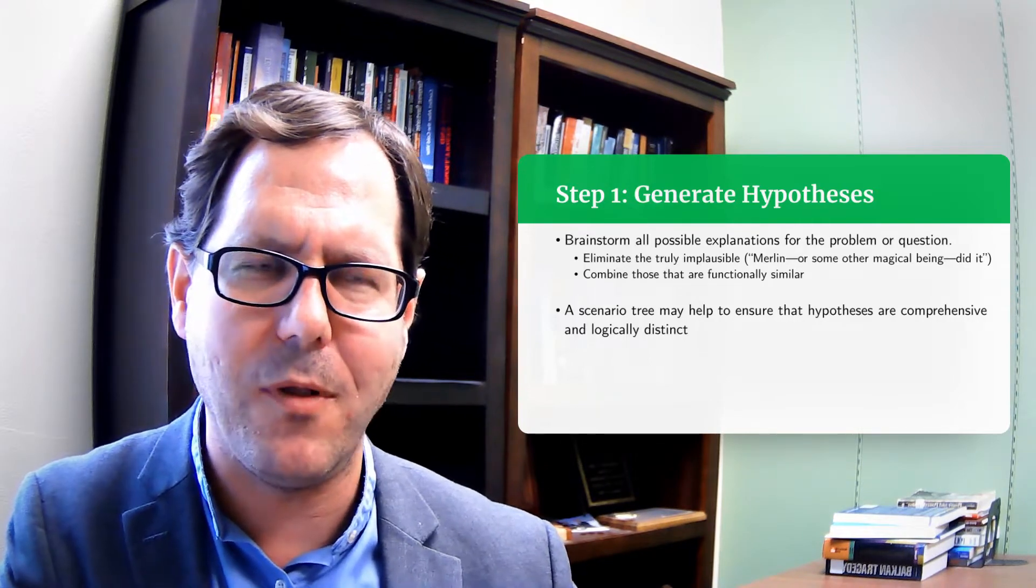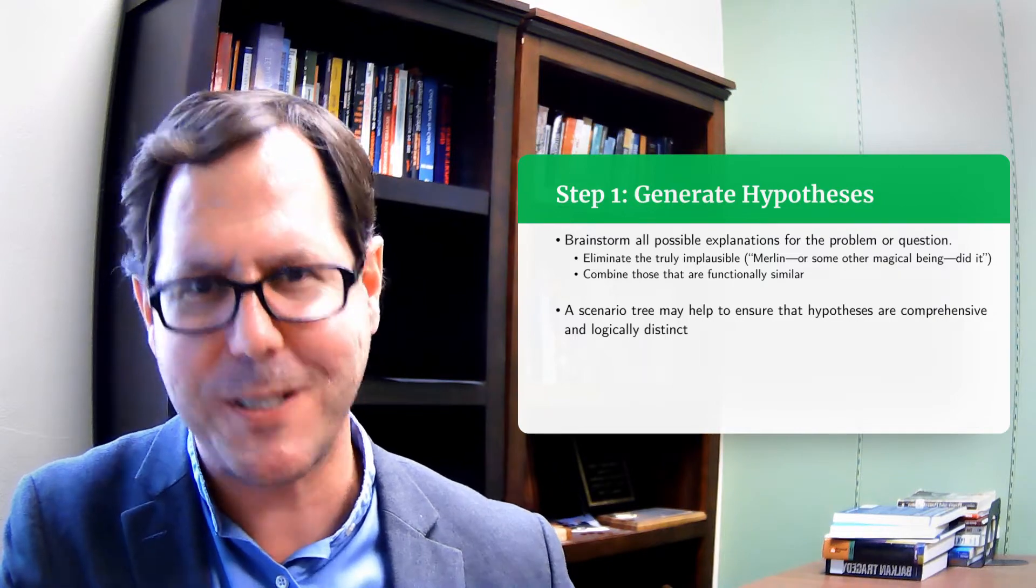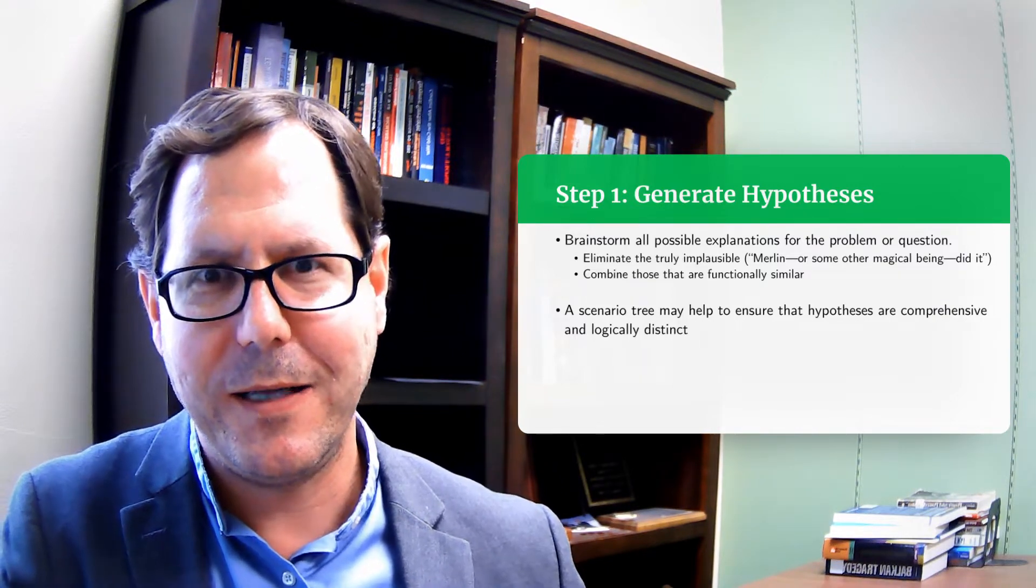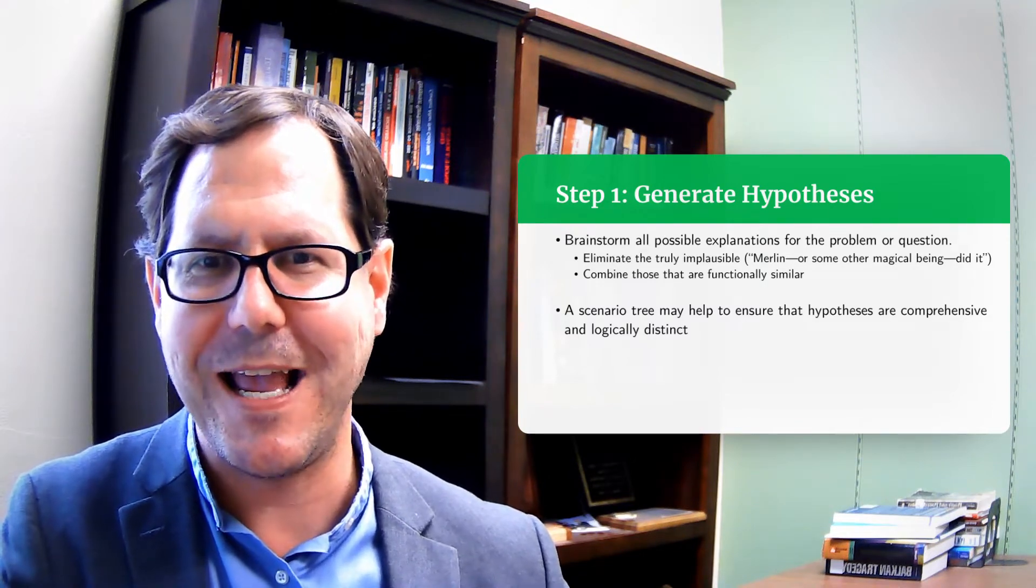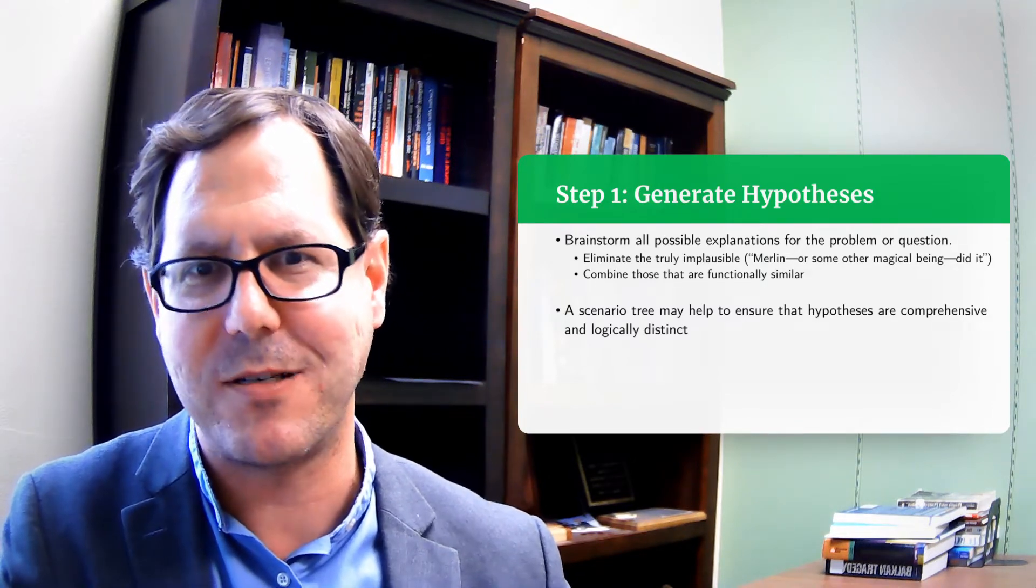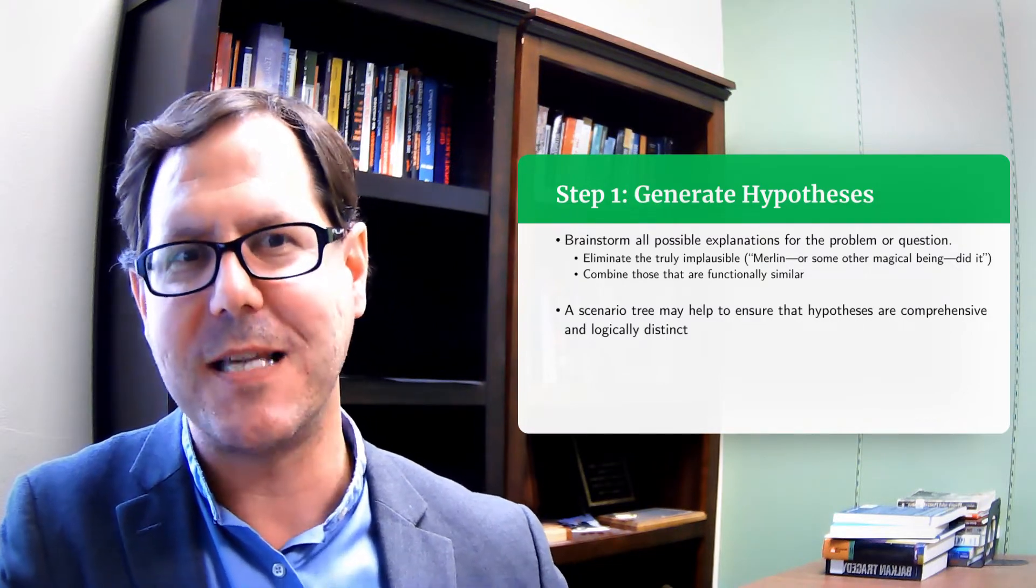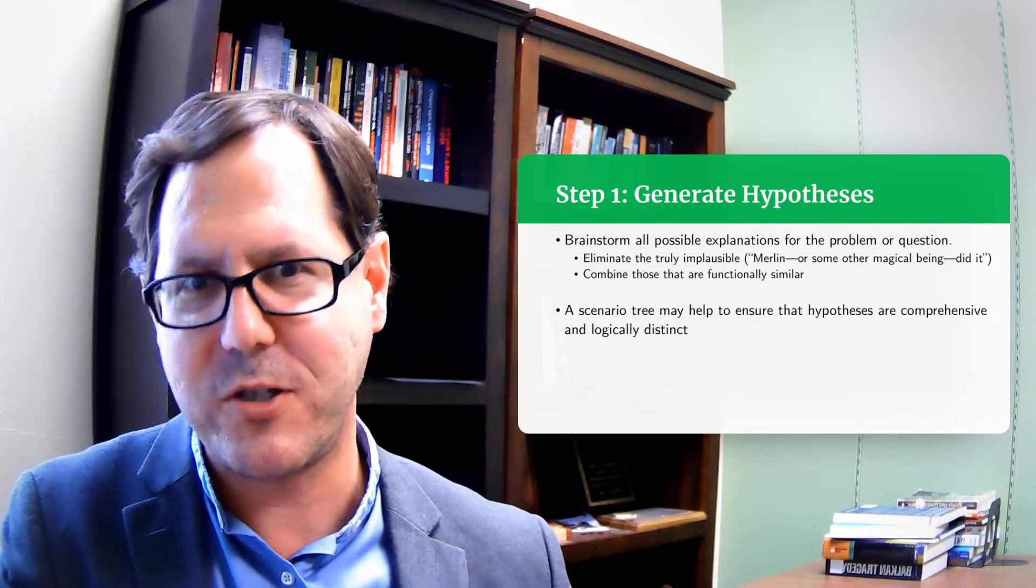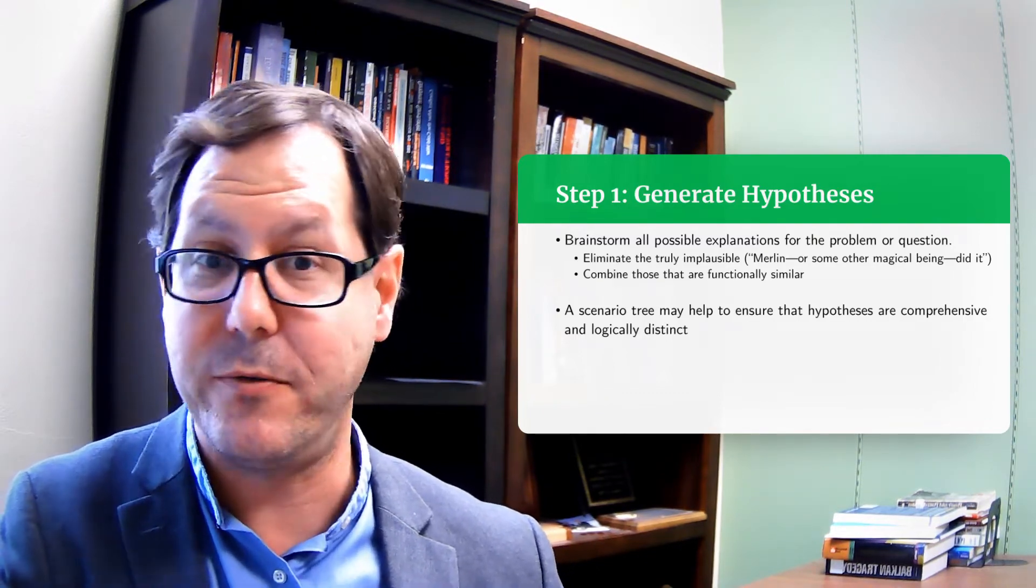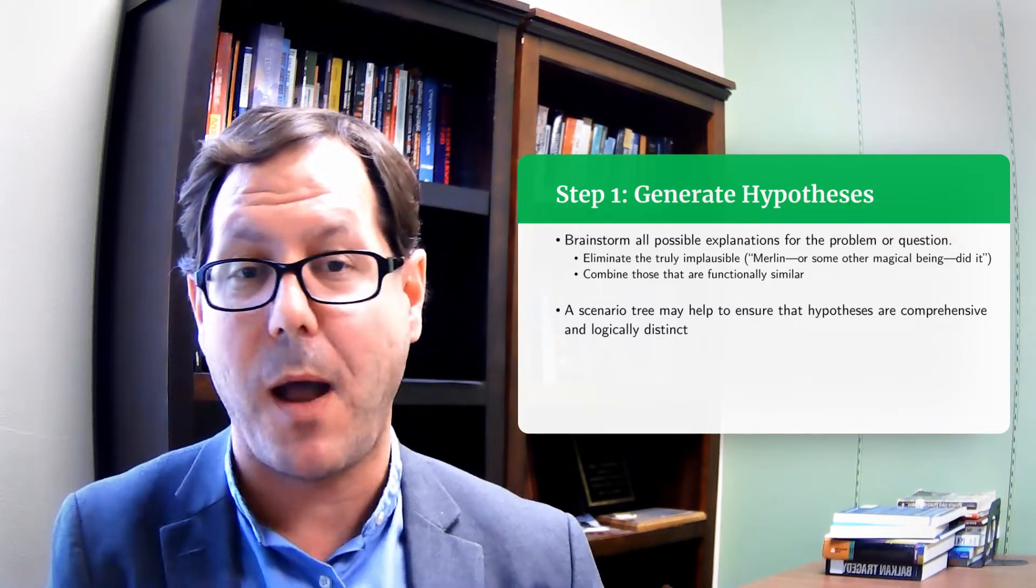I always use the example of whether or not Iraq has weapons of mass destruction because that was an important policy question in which the intelligence community looks back and said, actually, we didn't use the analysis of competing hypotheses method. We didn't adequately consider alternative hypotheses. And if we had done that, we might have seen things differently. With the question of whether Saddam Hussein has weapons of mass destruction in 2002, 2003, we could develop a range of hypotheses.